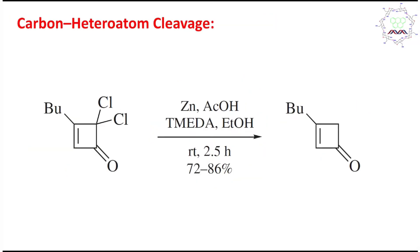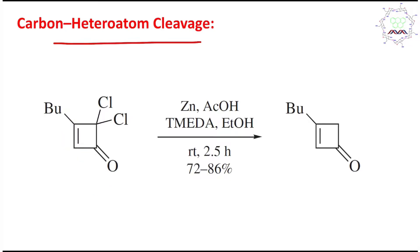The next example demonstrates carbon–heteroatom cleavage. Here, two types of groups are present: an alpha–beta unsaturated carbonyl compound and two carbon–chlorine bonds. Selectively, the carbon–chlorine bonds are reduced because they are more prone to reduction. Zinc preferentially reduces the carbon–halogen bond, while the carbon–carbon double bond in the alpha–beta unsaturated carbonyl remains unaffected in this case.